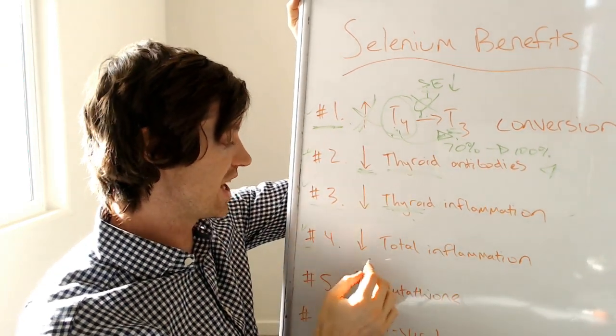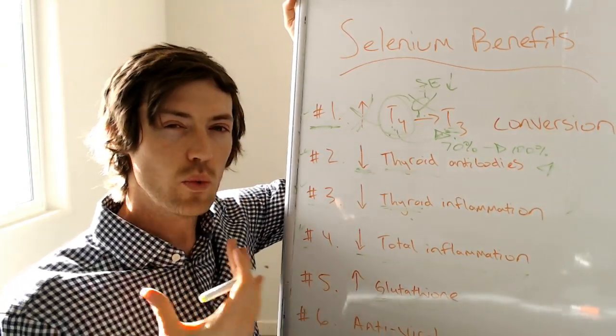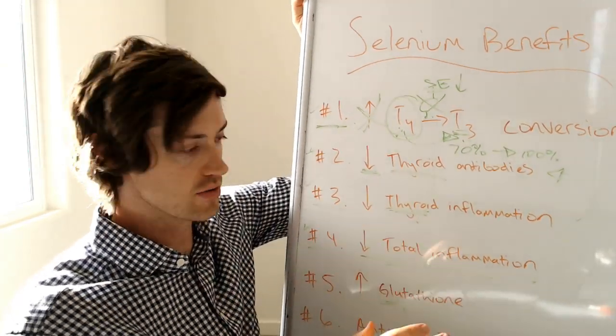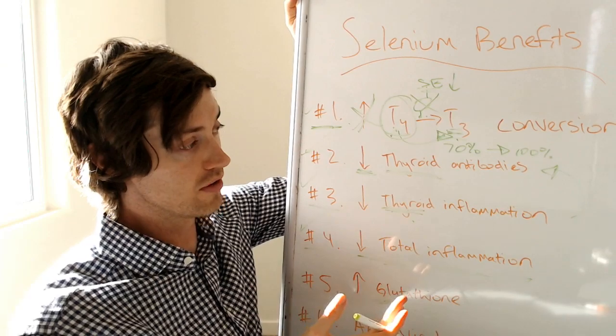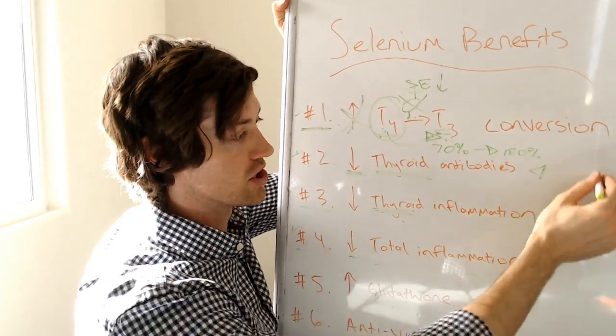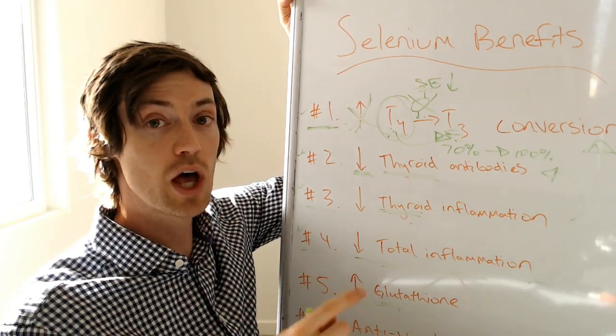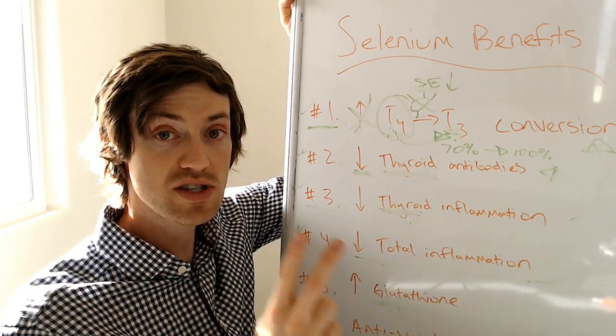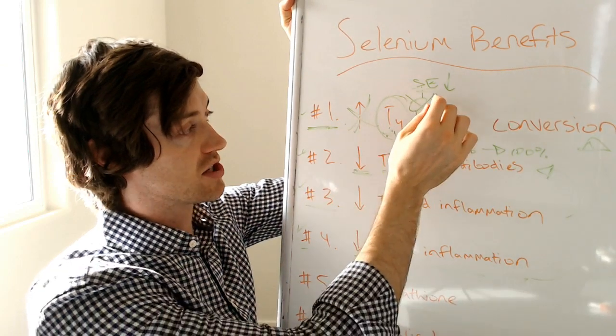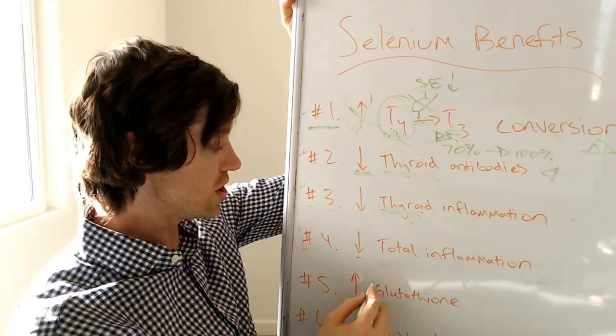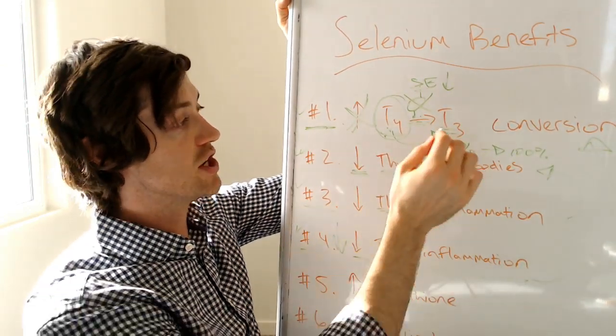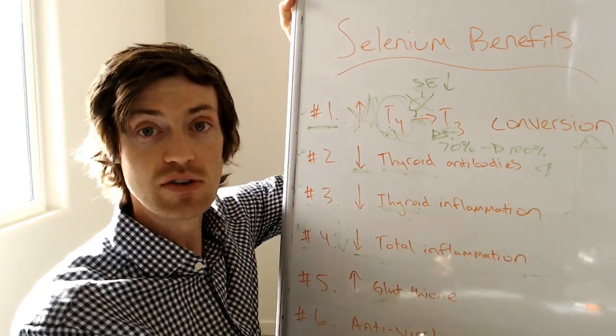So you probably know what I'm talking about if you have Hashimoto's. You'll probably feel that inflammation specific to the thyroid gland. Now, selenium helps reduce that probably by increasing the amount of glutathione, but that's another important thing. Number four is that it also helps reduce total inflammation. So we care about thyroid inflammation, of course, right? But we also care about total inflammation because total inflammation reduces T4 to T3 conversion also. So selenium is helping increase T4 to T3 conversion in two separate ways. Number one is that selenium is involved in this process. And number two, if you can reduce inflammation, then you can also help indirectly increase T4 to T3 conversion.